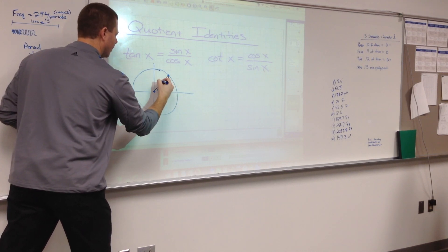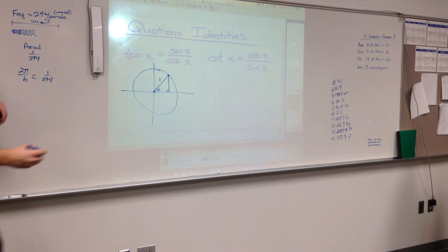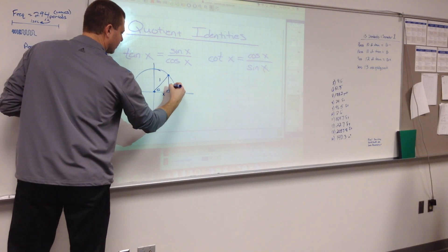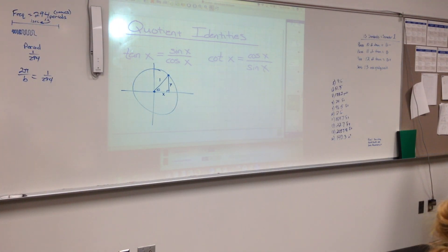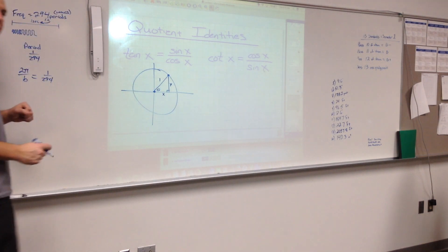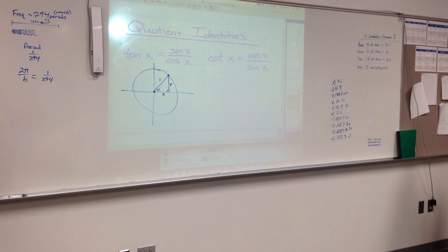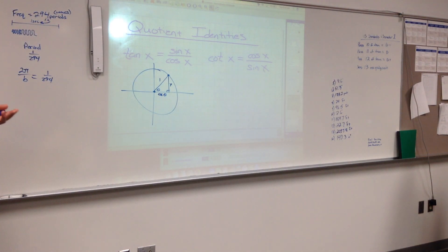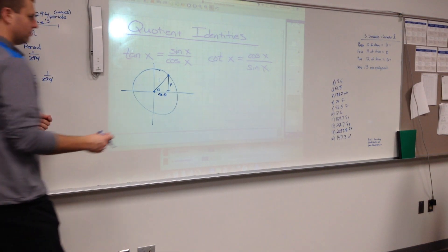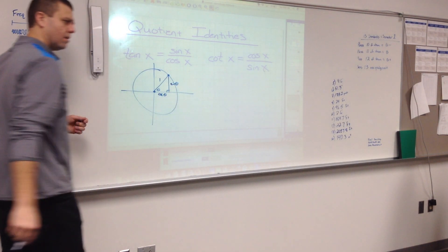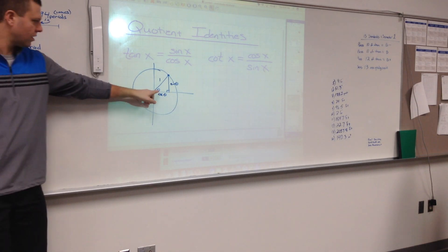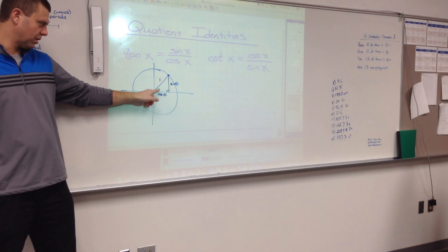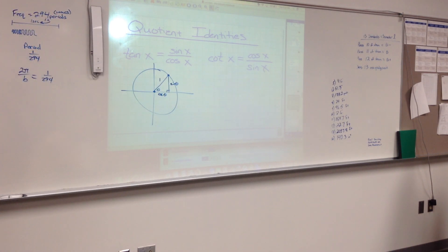Let's say I have a unit circle. This is some x distance and some y distance. Cosine of theta equals x over 1, or simply x. So I can replace x with cosine of theta. And y is equal to sine of theta. So tangent, which is opposite over adjacent, is sine over cosine. That's why these quotient identities are true.